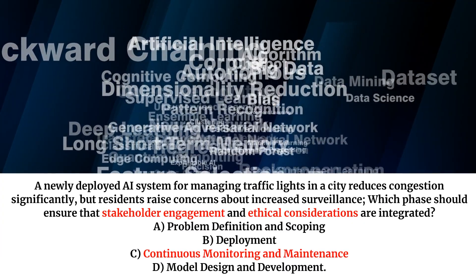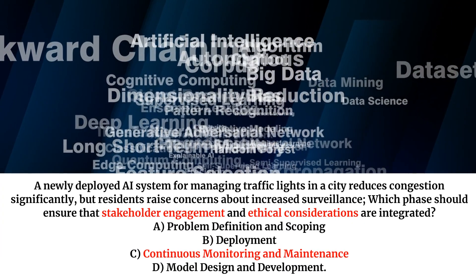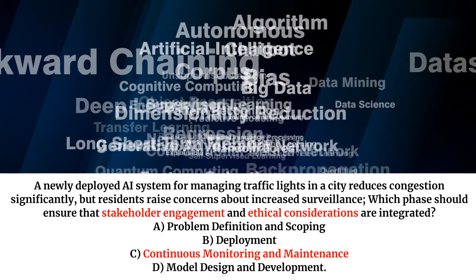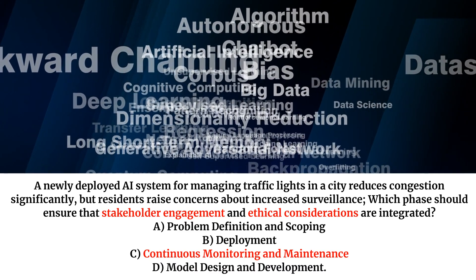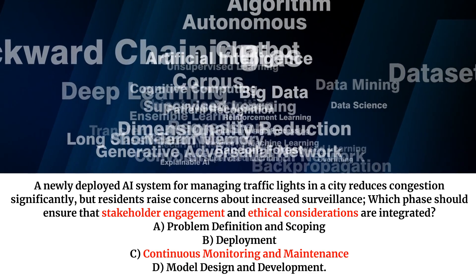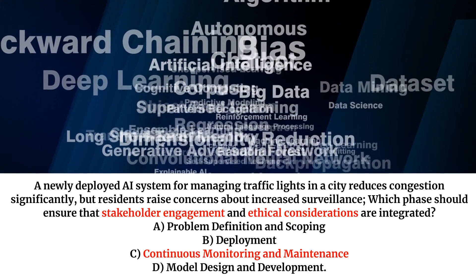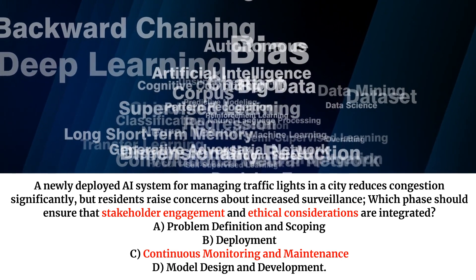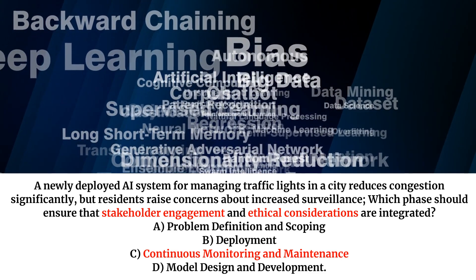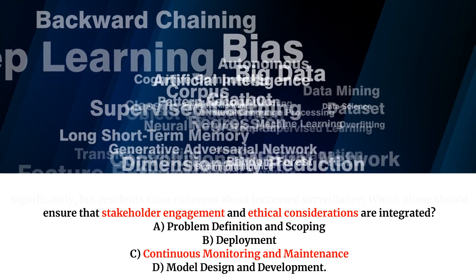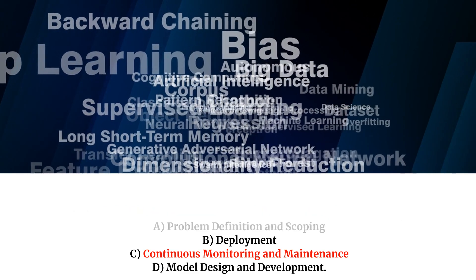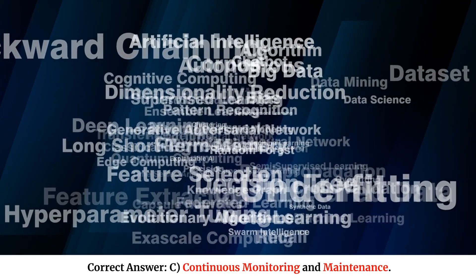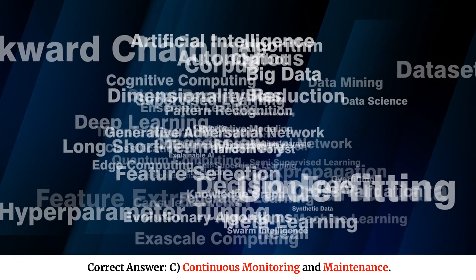A newly deployed AI system for managing traffic lights in a city reduces congestion significantly, but residents raise concerns about increased surveillance. Which phase should ensure that stakeholder engagement and ethical considerations are integrated? A. Problem definition and scoping. B. Deployment. C. Continuous monitoring and maintenance. D. Model design and development. Correct answer: C. Continuous monitoring and maintenance.